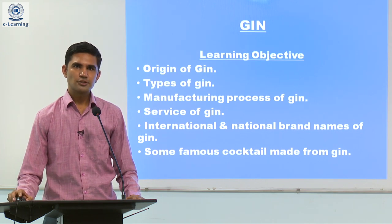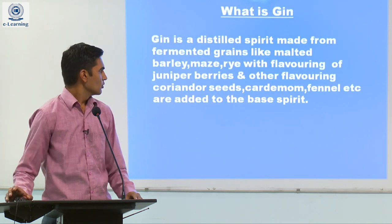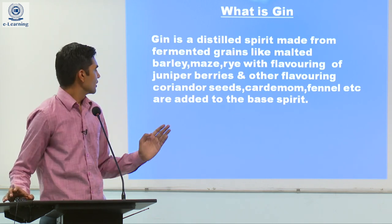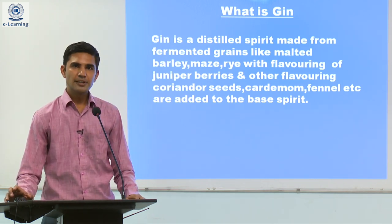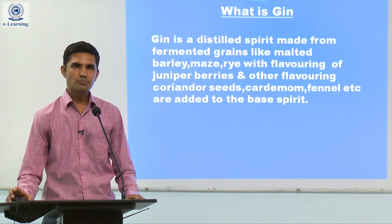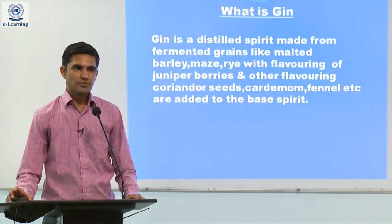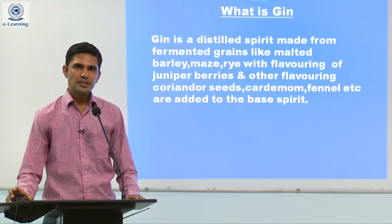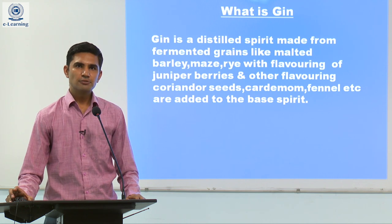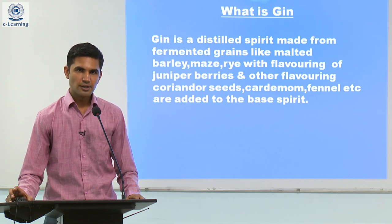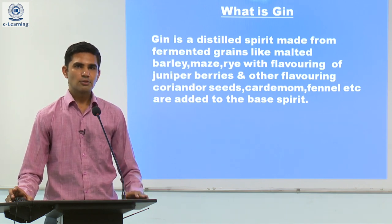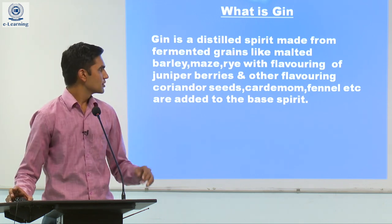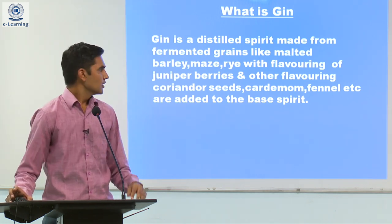So first, what is Gin? As you can see in the slide, Gin is a distilled spirit made from fermented malted barley, corn, or rye. Gin is a colourless drink. We add juniper flavour to it — if we do not add juniper flavour it becomes vodka. Other flavours you can also add along with the juniper berries, like coriander seeds, cardamom, fennel, etc.